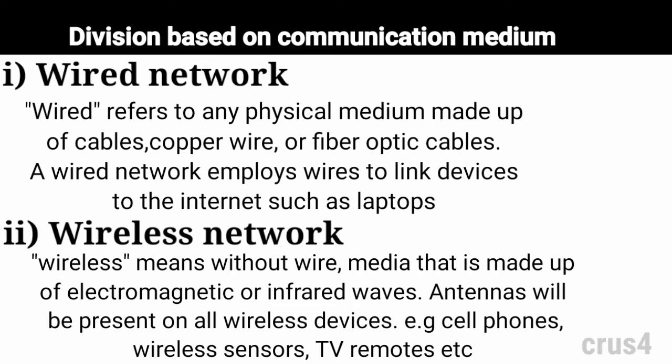TV remotes, satellite dish receivers, and laptops are all examples of wireless devices. For data or wireless communication, a wireless network uses radio frequency waves rather than wires.